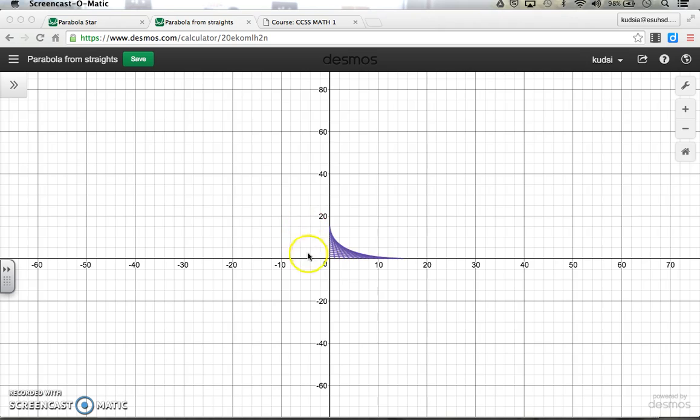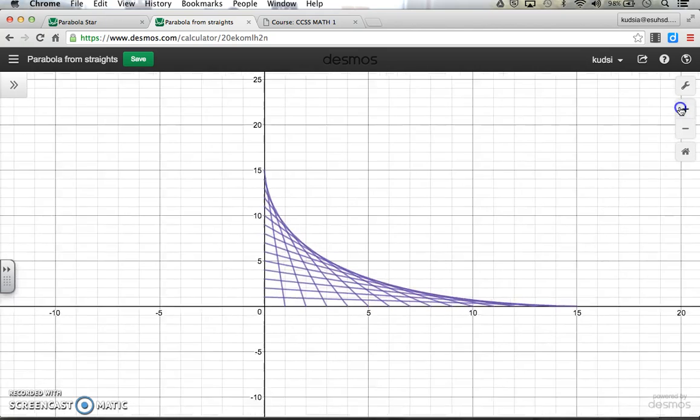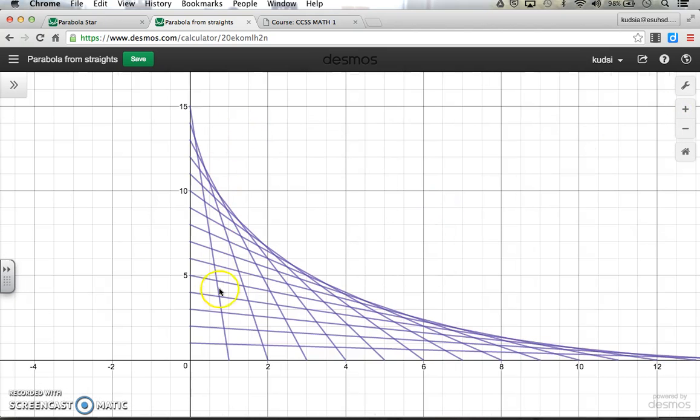So the idea here is what we have is just a what looks like sort of a parabola, but if we zoom in and zoom in, you'll realize these are all straight lines. I did this by basically creating a series of equations, and once I realized what the pattern is, I didn't have to do a whole lot of work.